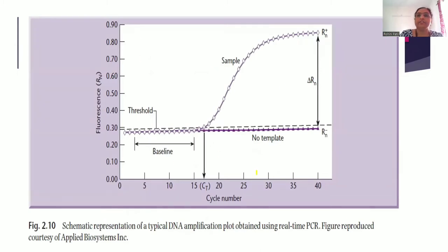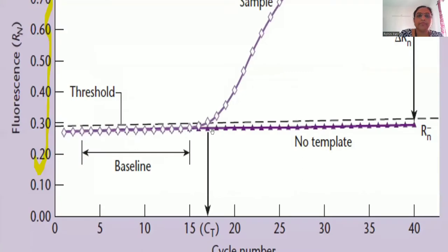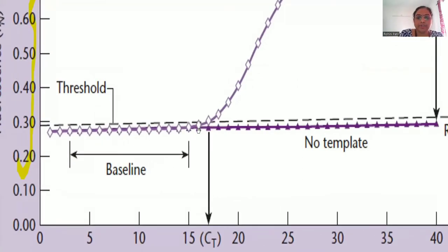Here is a graph of cycle number versus fluorescence. After every cycle, the fluorescence is measured and plotted. What you observe is a baseline — that is the background fluorescence. From a particular point, there is a lifting of the fluorescence from the baseline, meaning at a particular cycle the fluorescence becomes detectable.